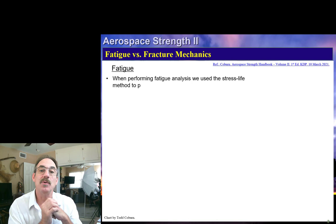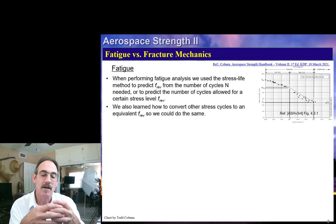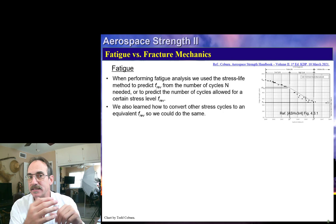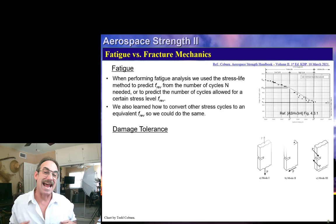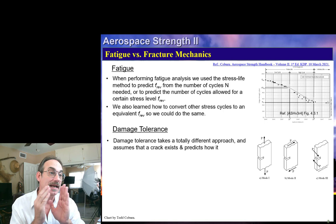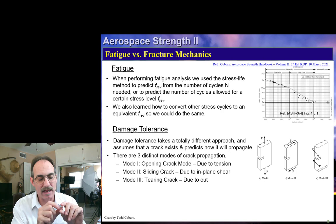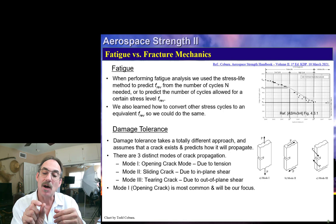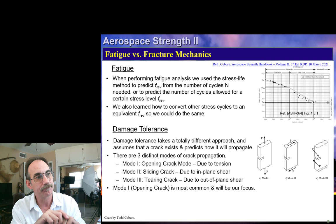We've seen in the last few lectures how to evaluate the life of a part under cyclic loading using a fatigue approach. That approach used test data of a part subjected to fully reversed stress, and we came up with curves expressing how fatigue strength relates to number of cycles to failure. Fracture mechanics, or damage tolerance, uses a completely different approach — we either measure cracks or defects, or assume a crack size based on our inspection method, then evaluate how that crack propagates through the part.